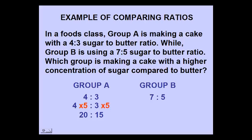We will now do the same thing with group B. It had a 7 to 5 ratio. So to make that number 5 a 15, we are going to multiply both sides by 3, making an equivalent ratio of 21 to 15.